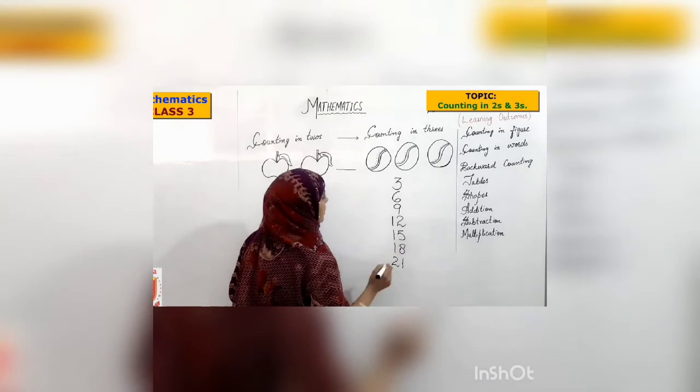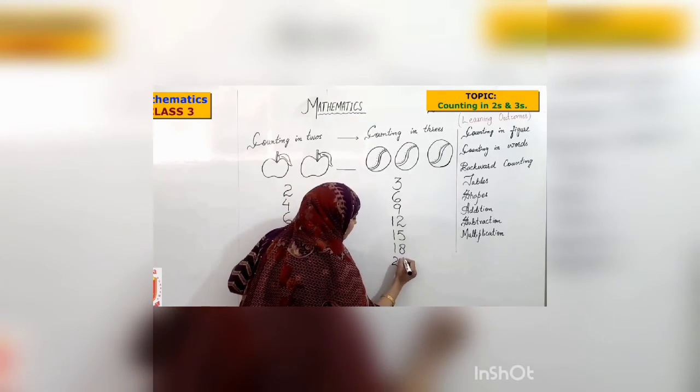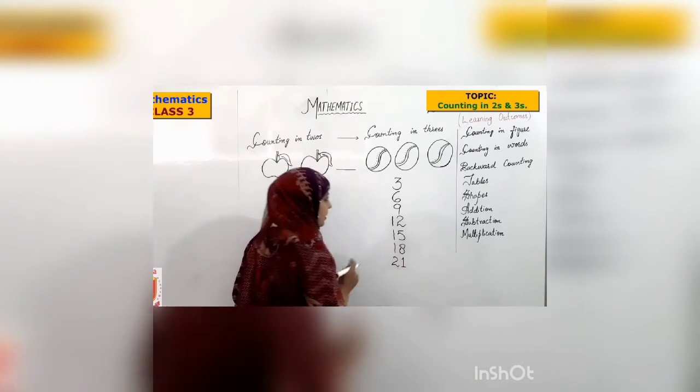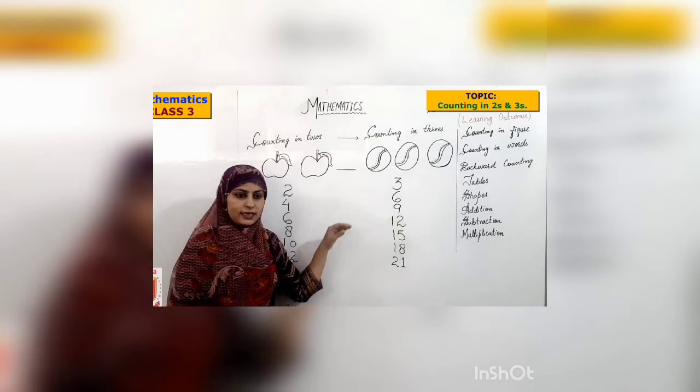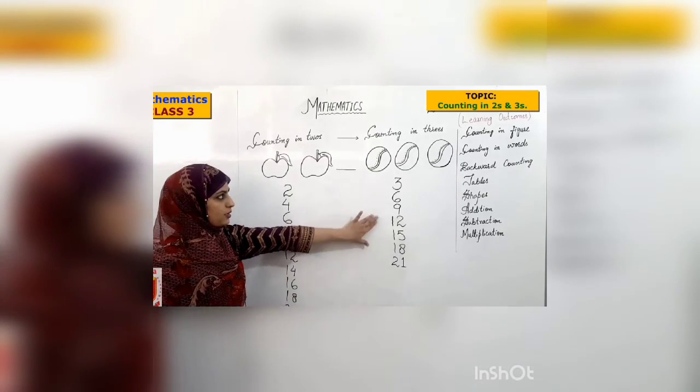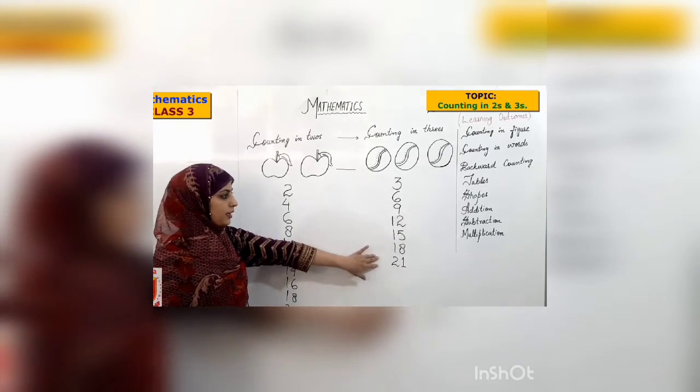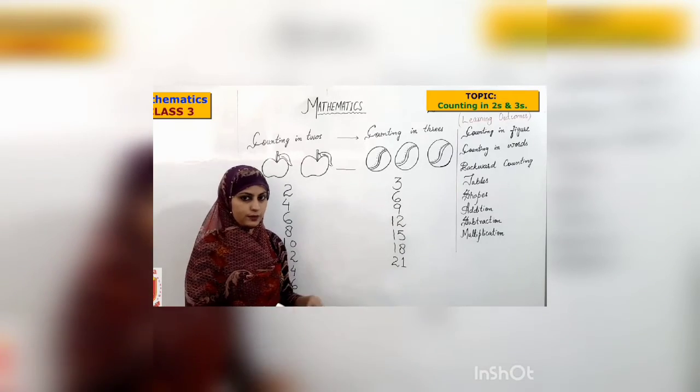This counting in threes we are writing, you must be thinking Miss Anna what is she writing? Table of three. When we are counting in threes, we are writing the table of three.